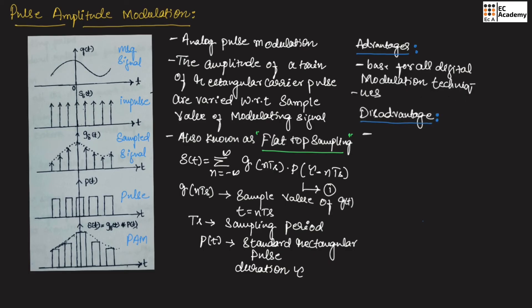Coming to disadvantages, it requires high bandwidth and also there will be effect of noise. This is about generation of pulse amplitude modulation.